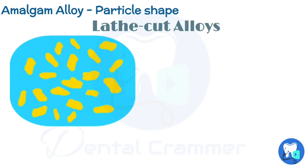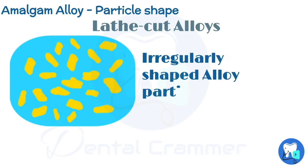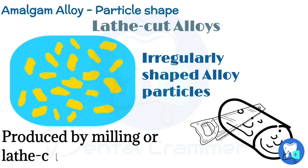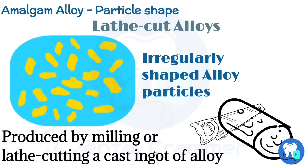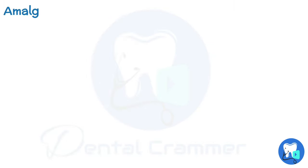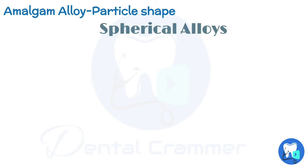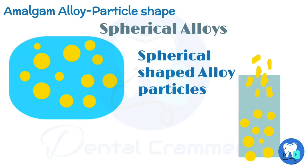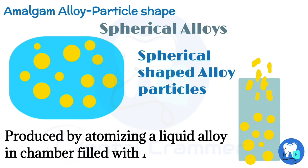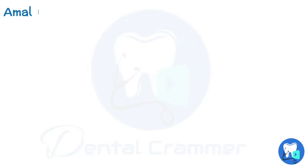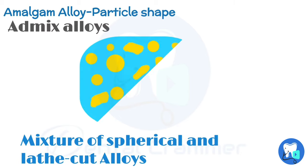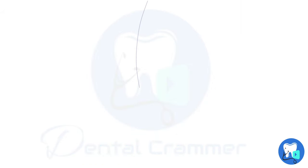Lathe cut alloys are those which have irregularly shaped alloy particles. These particles are produced by milling or lathe cutting a cast ingot of alloy. Spherical alloys have particles which are spherical in shape and are produced by atomizing a liquid alloy in a chamber filled with an inert gas. Admix alloys are a mixture of spherical and lathe cut alloys, as shown in the picture.